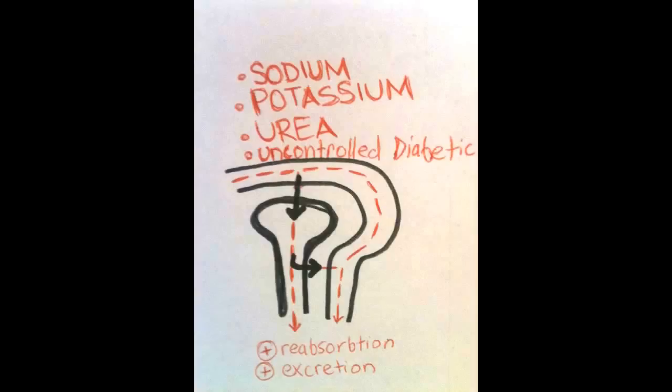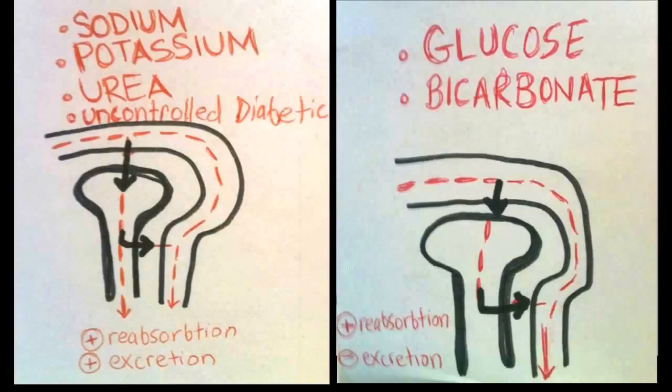Lastly, in comparison to sodium, potassium, and urea, we have glucose and bicarbonate. These substances are fully reabsorbed, meaning none of it in a normal person should be excreted in the urine. Every cell in the body needs glucose, but in certain conditions like diabetes, there's actually a greater amount of glucose than is needed and the body is unable to fully reabsorb it. Therefore, some of it gets dumped into the urine, and in patients with uncontrolled diabetes, you would notice a presence of glucose in their urine.